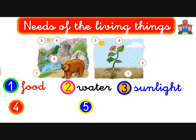We need the sun. Number four is the air. Plants, people, and animals breathe air to survive. Also the fish in the water — they take the air, the oxygen, from the water. So everybody, all living things need air.